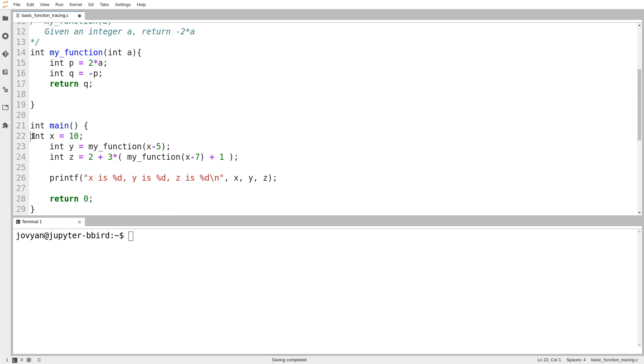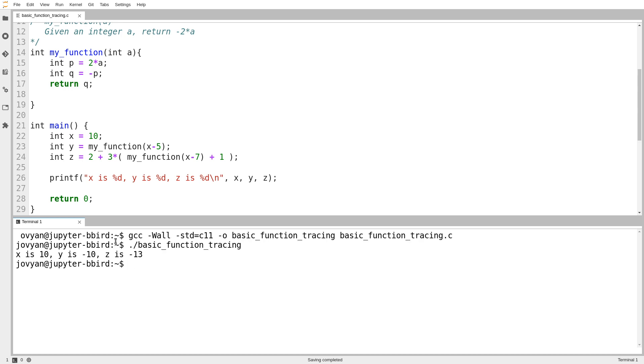First, let's run it to see whether the output that I gave a minute ago actually is the output the program produces. So there we go. We run it. X is 10. Y is negative 10. Z is negative 13. Great.